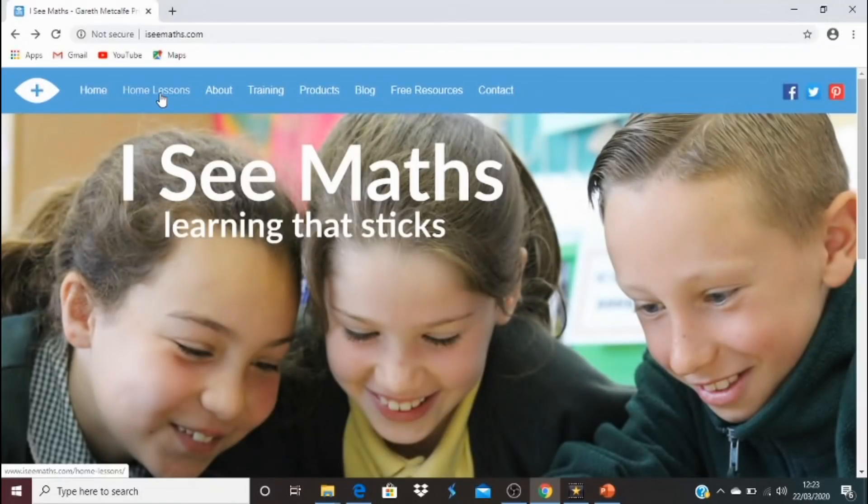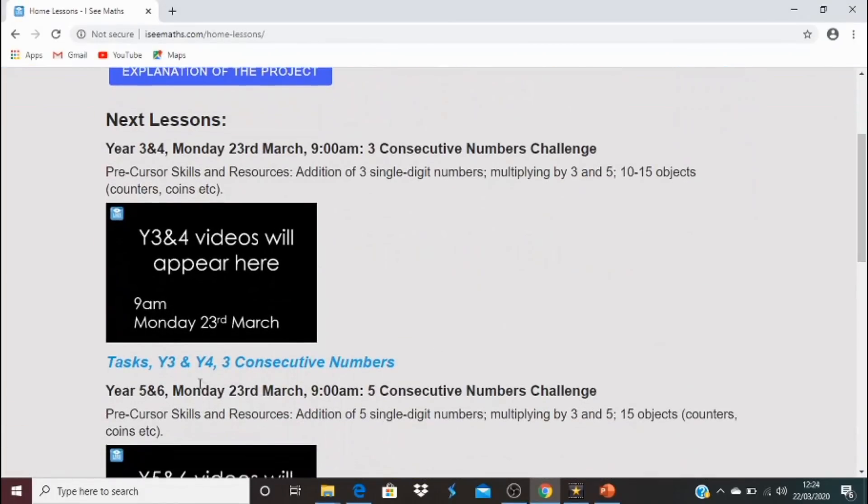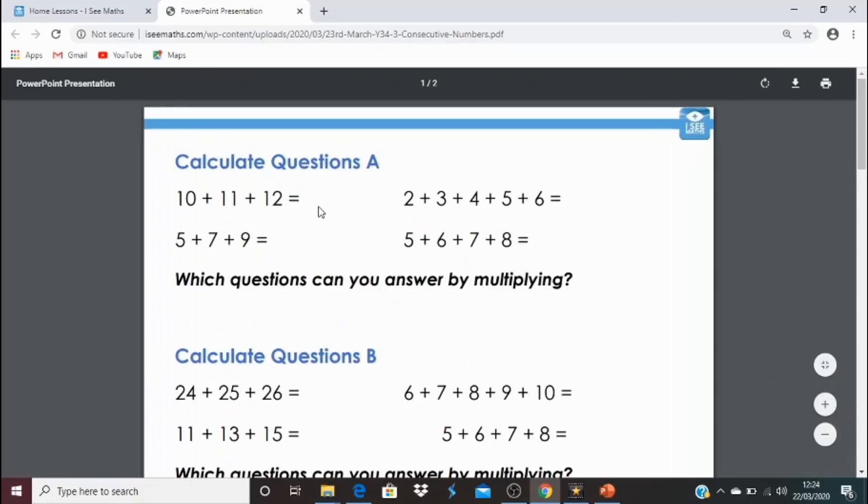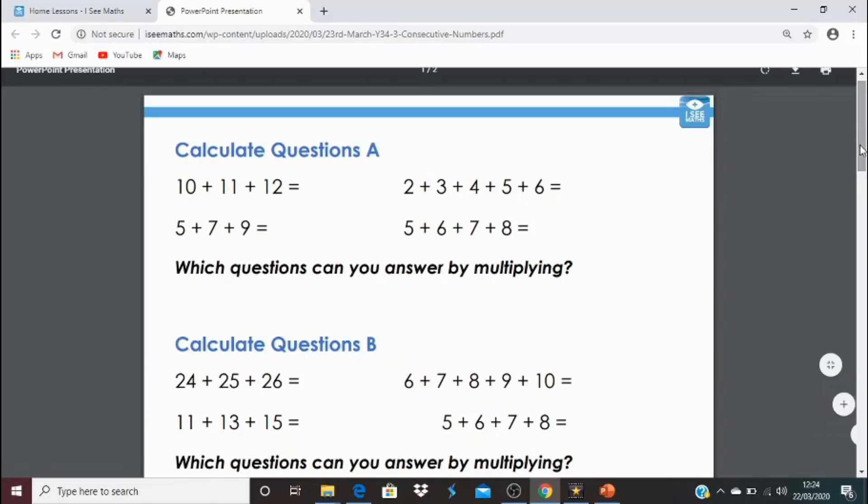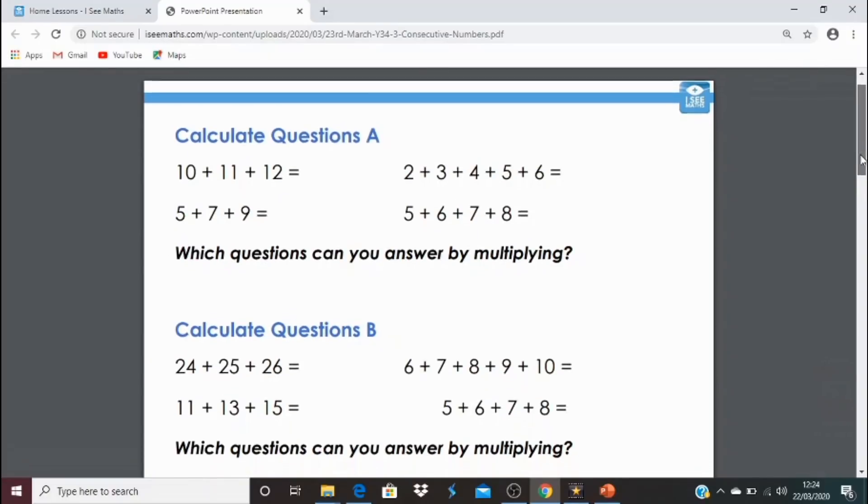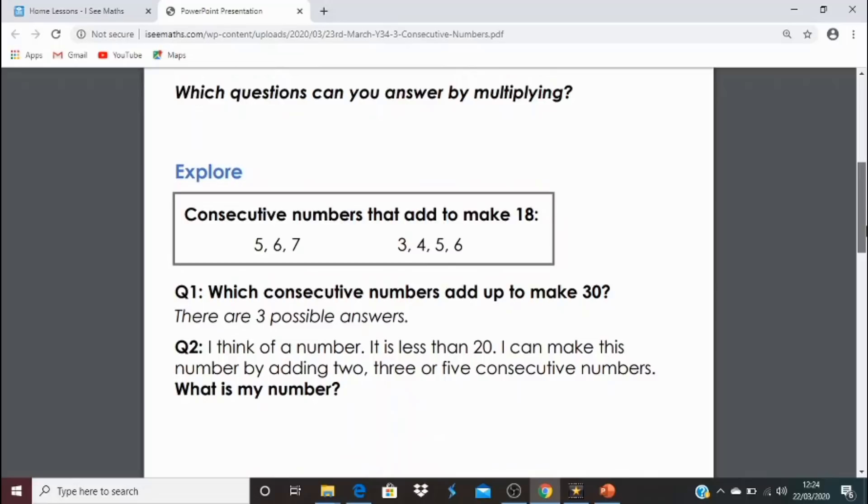So let's have a look at some of those tasks. icmaths.com, home lessons, you might already be on this page. If you go underneath the video, click on tasks, year 3 and 4, 3 consecutive numbers. And there's some beauties for you to choose between. You might have a go at calculate questions A, find the answers. Which of those questions can you actually answer by multiplying? Which multiplication did you do? Similarly, you might choose to have a go at calculate questions B. Or maybe you could have a go at the explore task. Consecutive numbers that add to make 18? Well, 5, 6, and 7 do. But then again, so do 3, 4, 5, and 6. Question 1. Which consecutive numbers add up to make 30? There are 3 possible answers. I wonder how many you'll find?